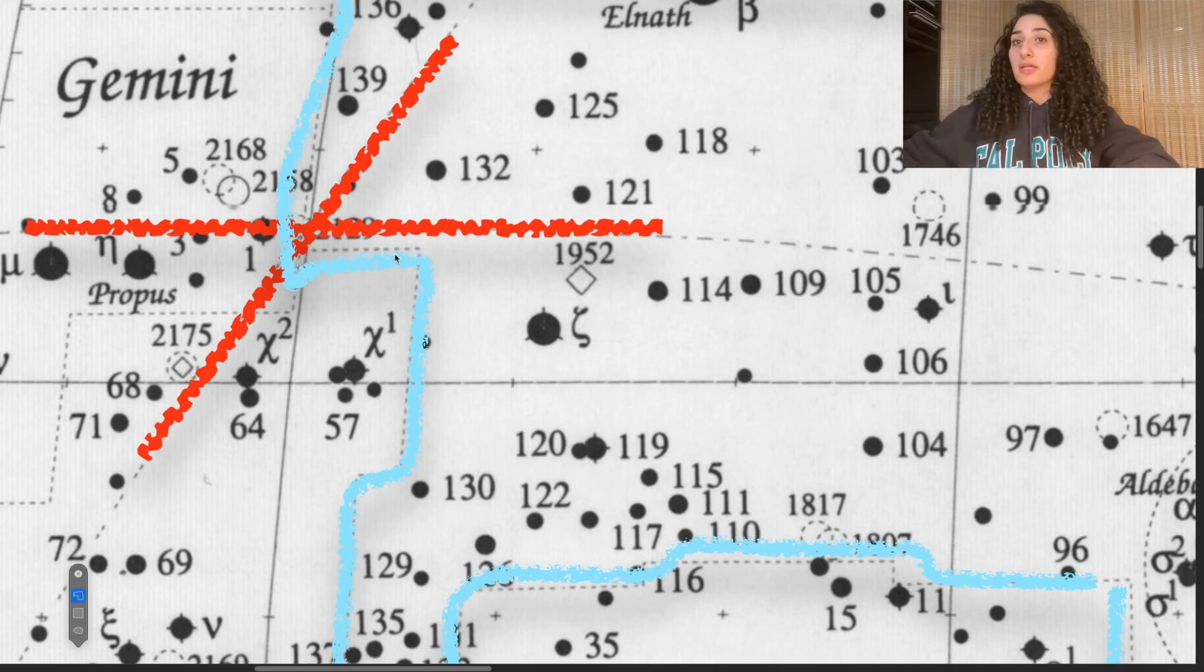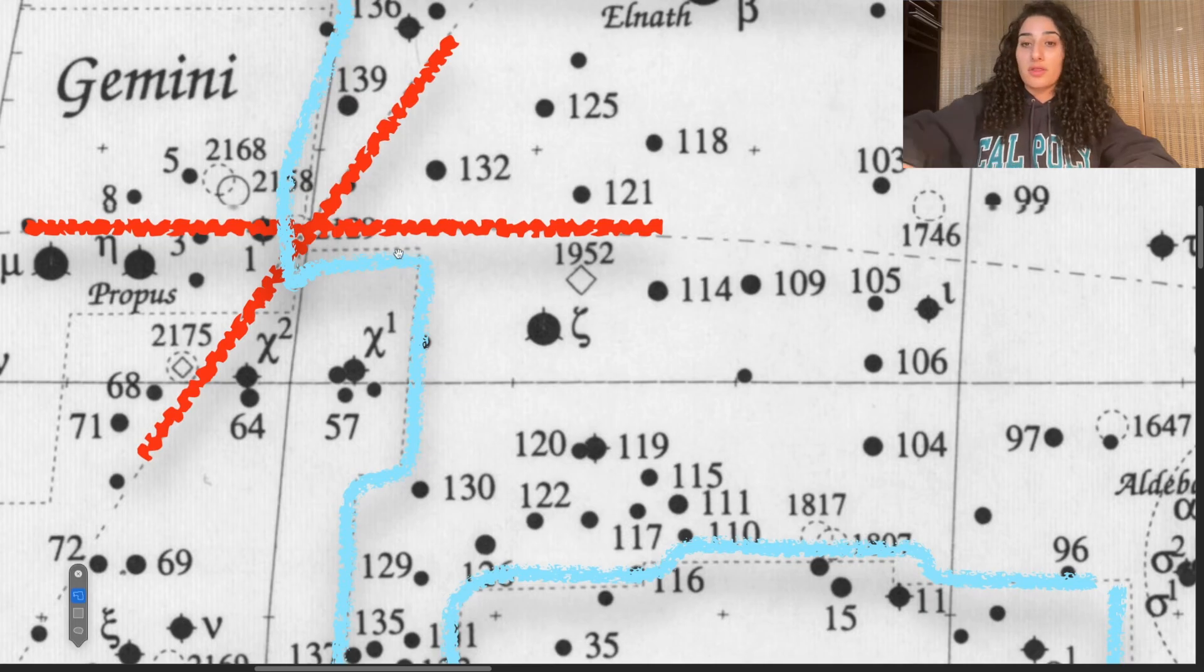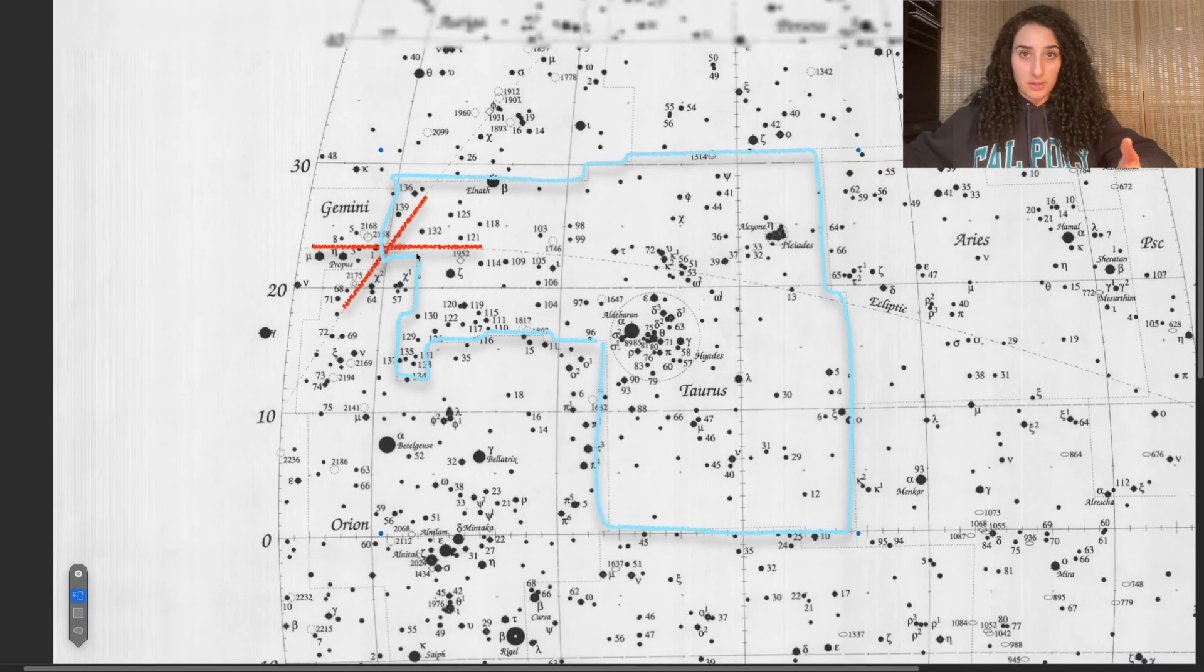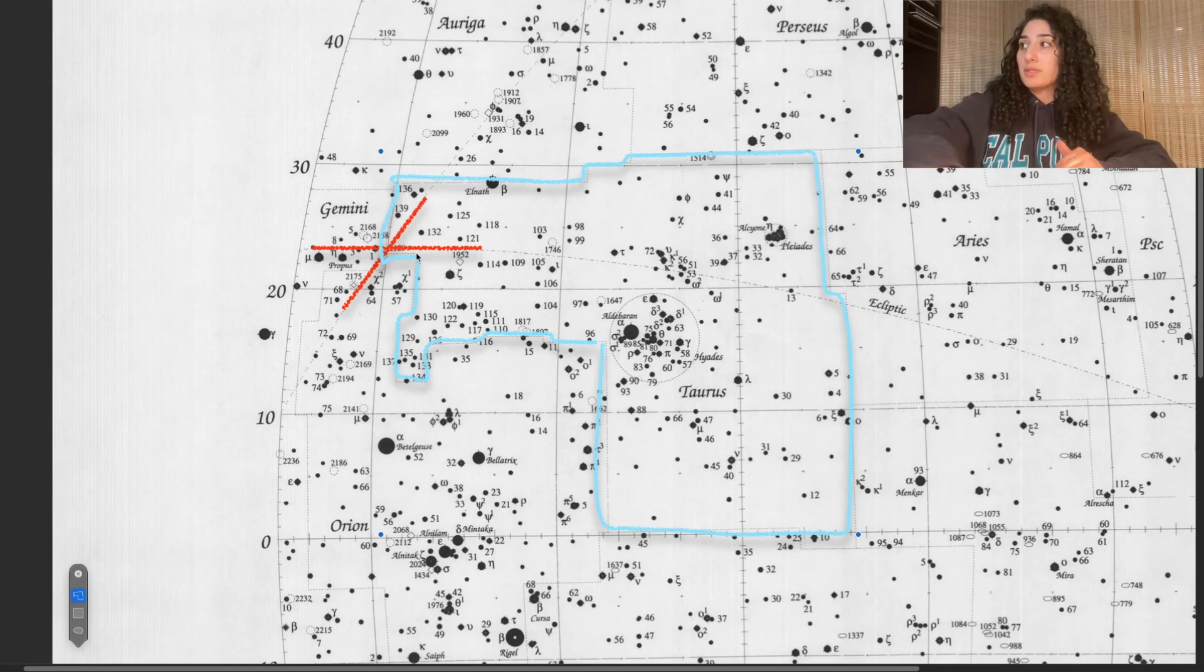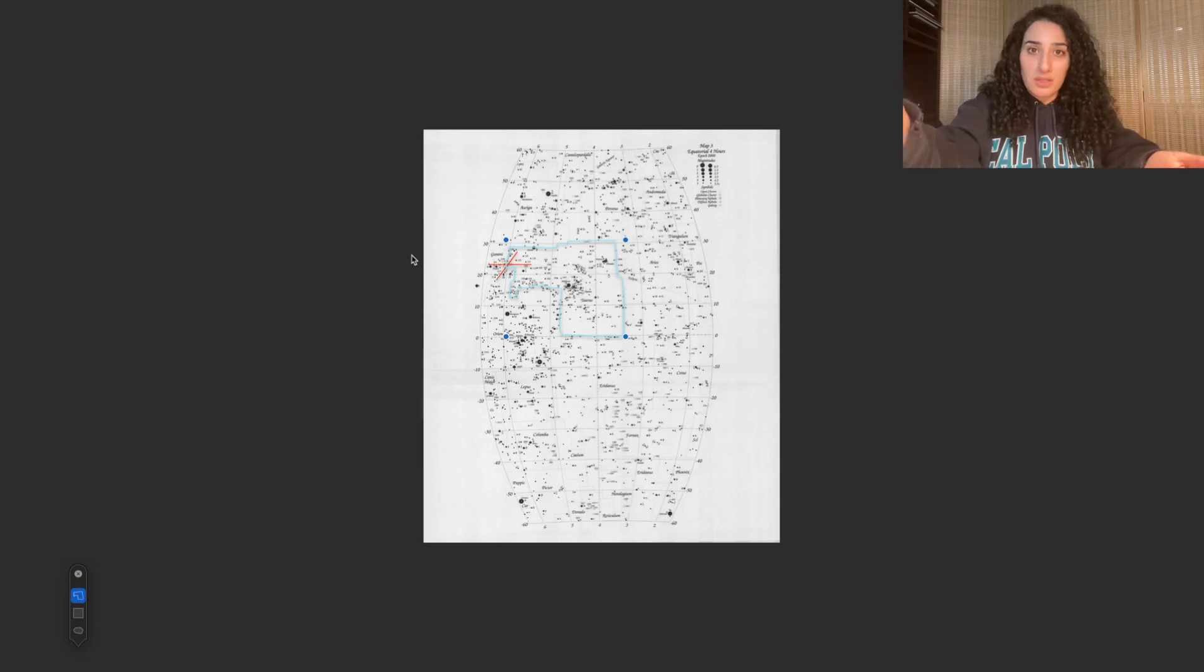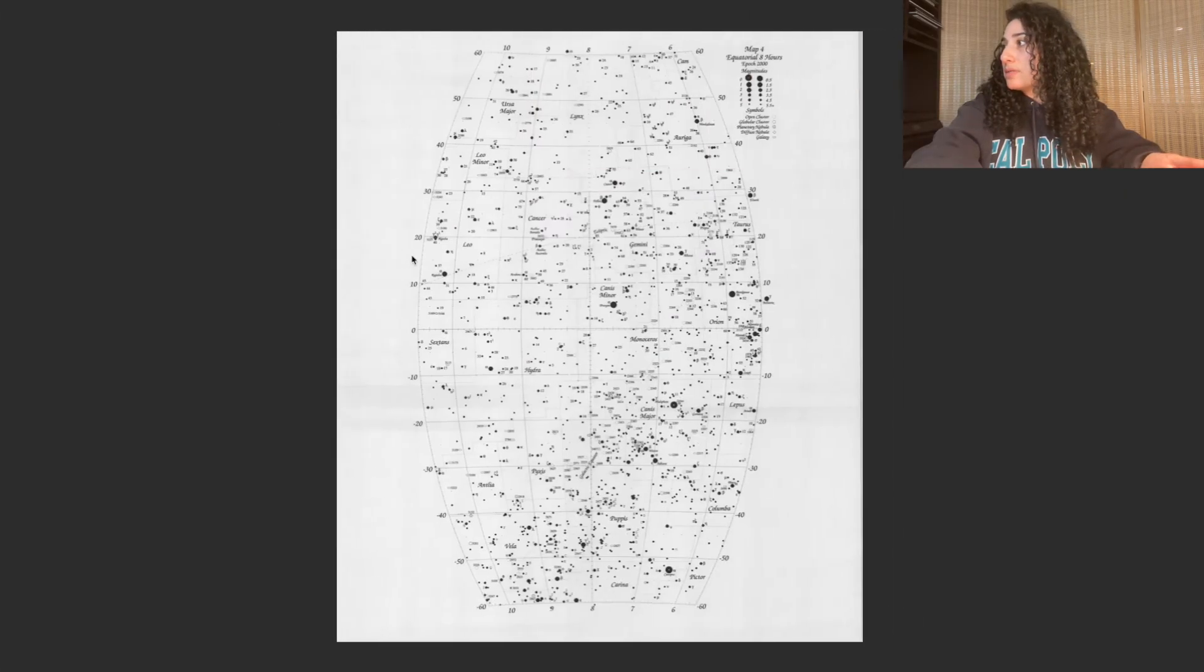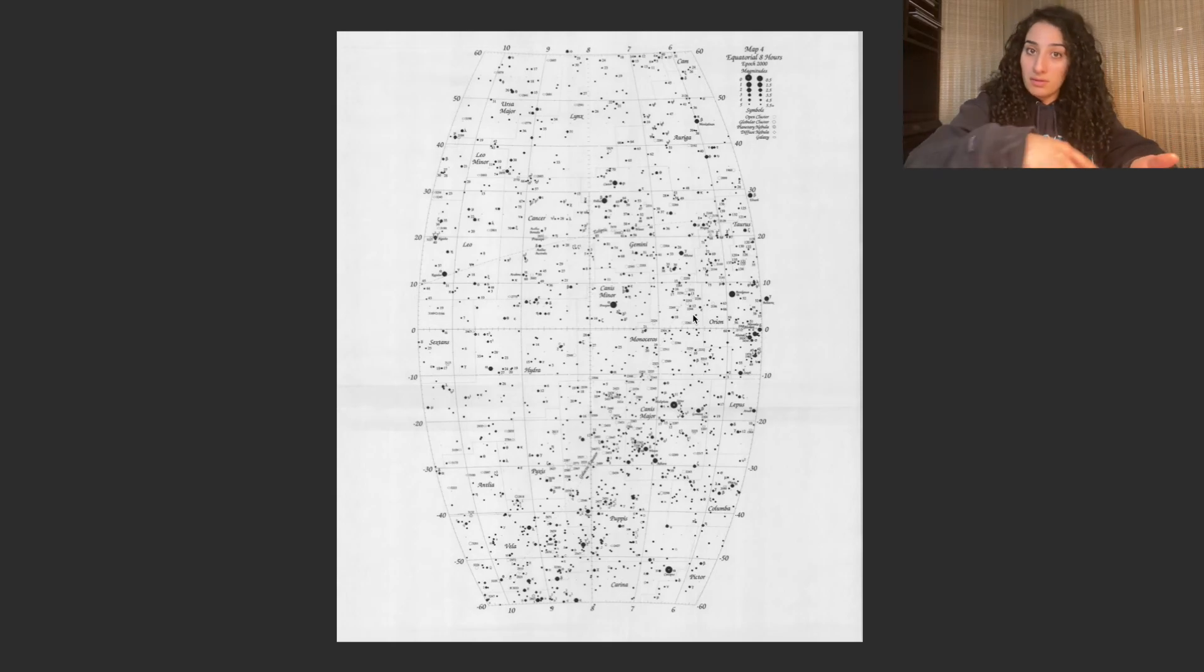Now, on the other hand, we're going to go ahead and look for the map where we see the second point of intersection between the galactic equator and the ecliptic. Now, I don't know off the top of my head which map that is, so I'm just going to have to keep scrolling through these maps to find the one where we have the ecliptic.